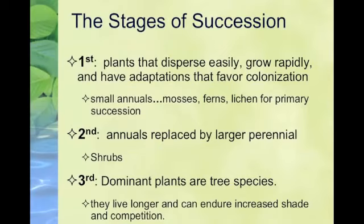The second stage is when larger perennials come in, like shrubs, because now there's better soil and they can start growing. They generally grow and take over some of the small annuals, but there are still some small annuals there. The third stage is when the tree species come in, because the shrubs have created much better soil. Trees live longer and start to compete and kill off a lot of the mosses, ferns, and small annuals. Once the trees start coming in, you start to notice there's an actual ecosystem there.